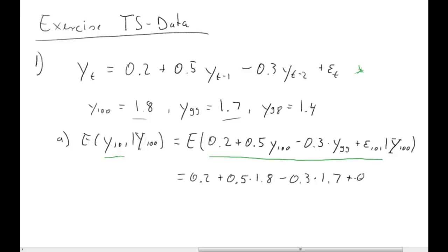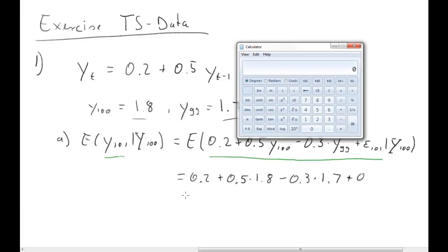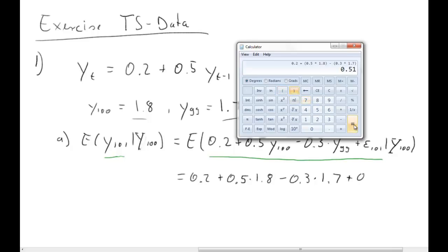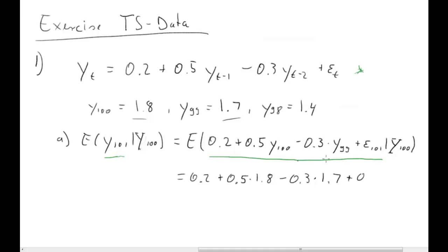So we just need to calculate: 0.2 plus 0.5 times 1.8 minus 0.3 times 1.7. Let me use the calculator — 0.2 plus 0.5 times 1.8 minus 0.3 times 1.7. The solution is 0.59. So that is equal to 0.59.